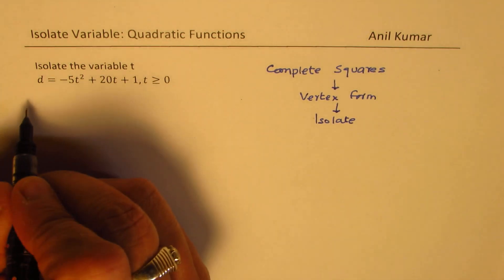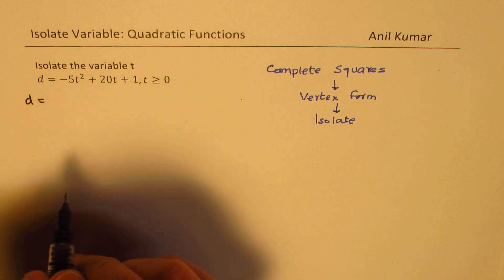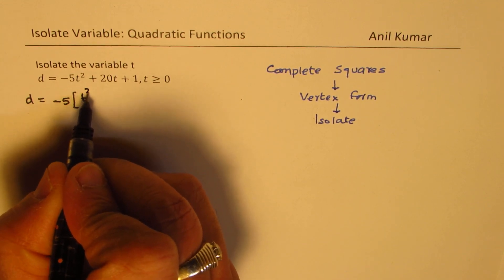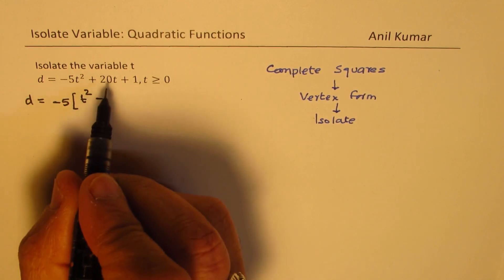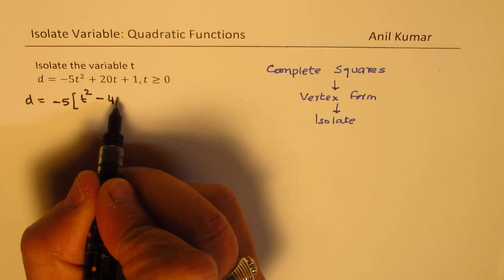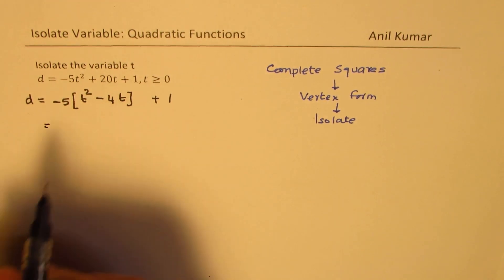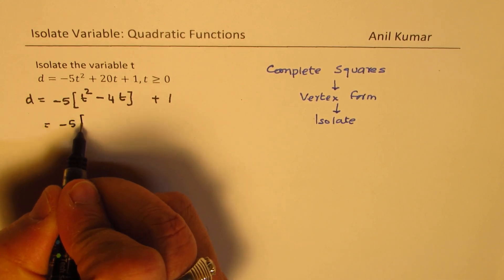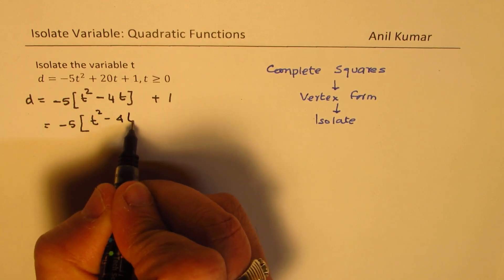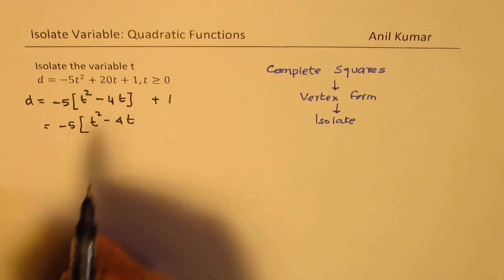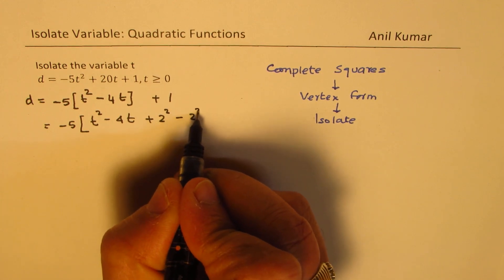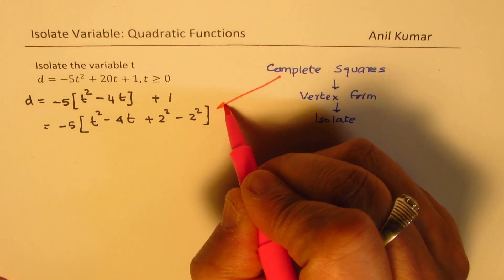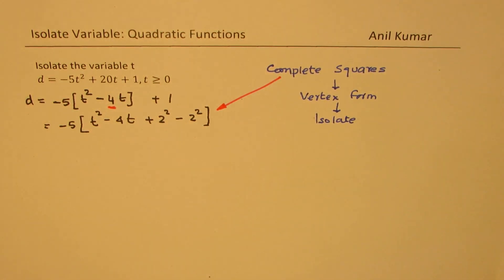Now let us see how to complete the squares. So we are given d equal to minus 5t squared plus 20t plus 1. We'll take the coefficient of t squared common. So within the brackets, we get t squared — the sign becomes minus — since we have t squared minus 4t. We'll do half of this coefficient, which is 4 — half of this is 2. We'll add and subtract 2 squared. That is the step involved in completing the square. So you do half of this coefficient and add and subtract its square.